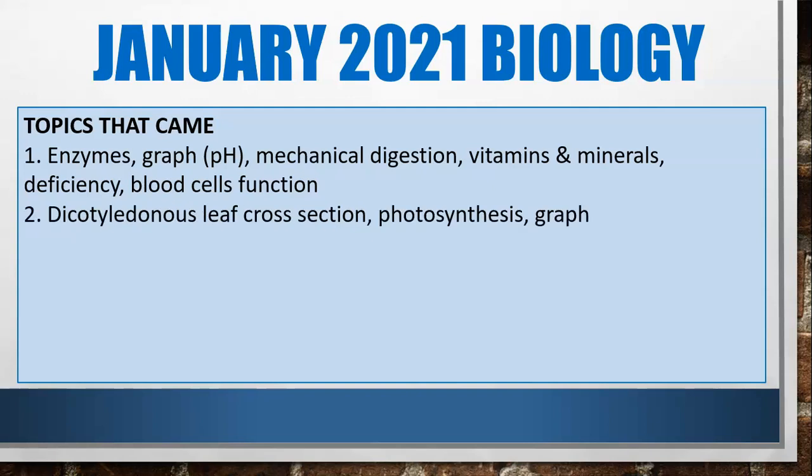Question two was all about plants and photosynthesis. There was a cross-section diagram of the dicotyledonous leaf, where you had to label the different layers of cells. Then they looked at adaptations for photosynthesis, and there was a graph showing the rate of photosynthesis and how it was affected by the amount of carbon dioxide.